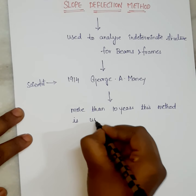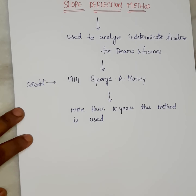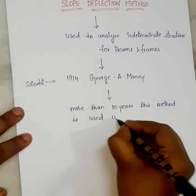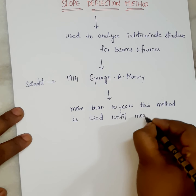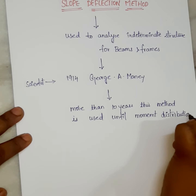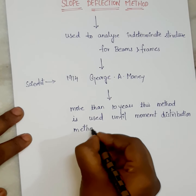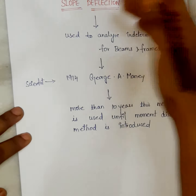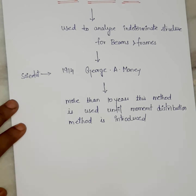Up to one decade, this type of method was used — until the moment distribution method was introduced. After the moment distribution method was introduced, it replaced the slope deflection method for analyzing beams and frames.